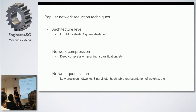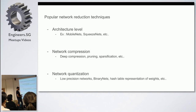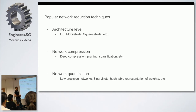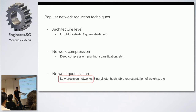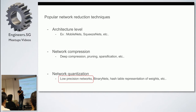The third category is quantization. You have a model with all parameters in 32-bit numbers, and you can quantize this to a lower number of bits — low-precision networks. Even one bit is possible, which is called binary networks, where all parameters are either zero or one. In this talk I will focus on this particular part: how to represent a model from 32-bit to 16-bit.